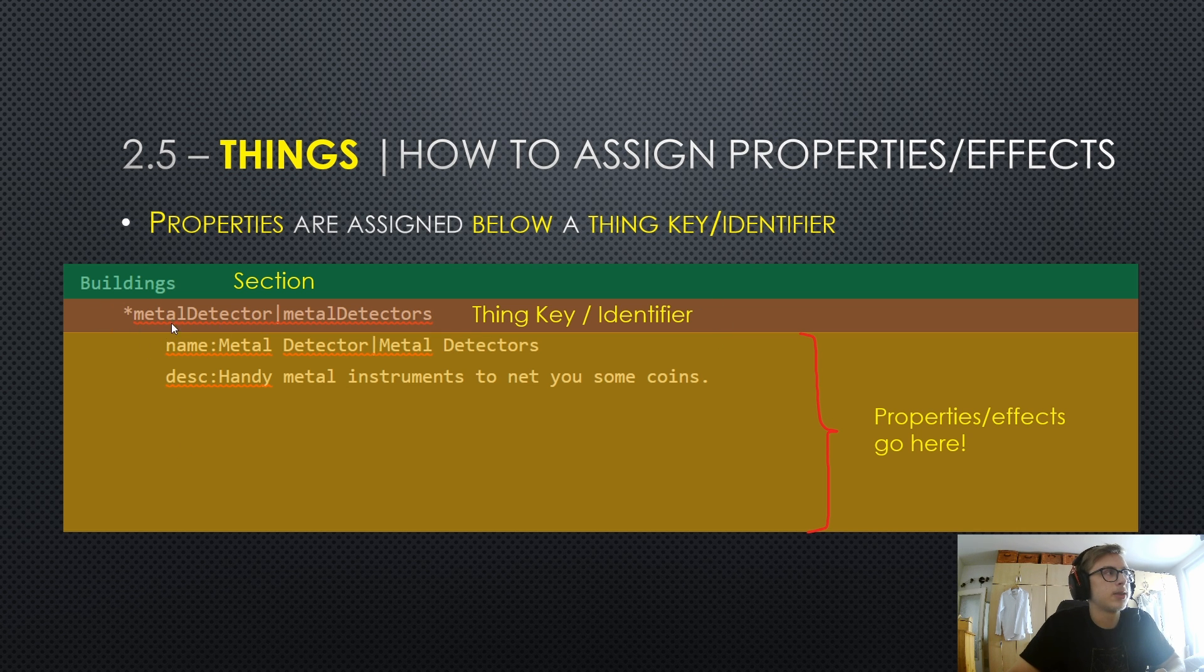And below that thing key are our properties. For example, we have our name property and our description property. And here we could also add different effects and properties as well.